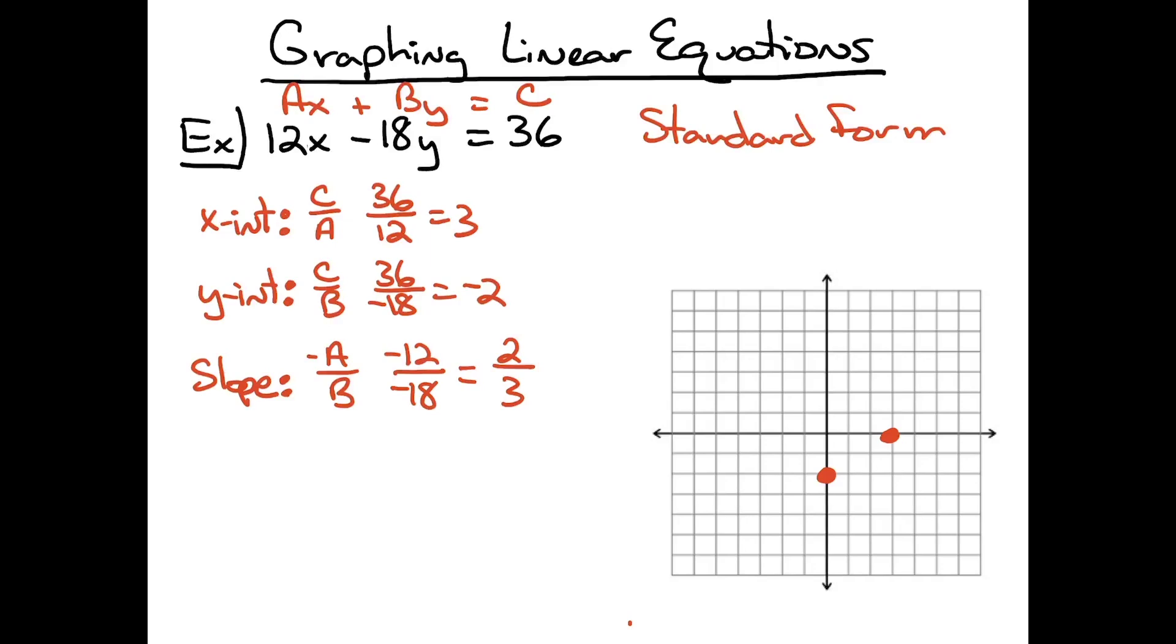Now if I want to verify that I've done this correctly, I can take these two dots, and I can see that by going up 2 and to the right 3, I do hit that other point. So from there, I know I have my line, and I can use those two points and graph my line. So that's the first example.